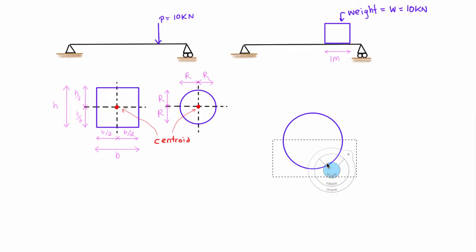Now for shapes with one axis of symmetry like semicircles, they're going to have their centroid somewhere along that one axis.